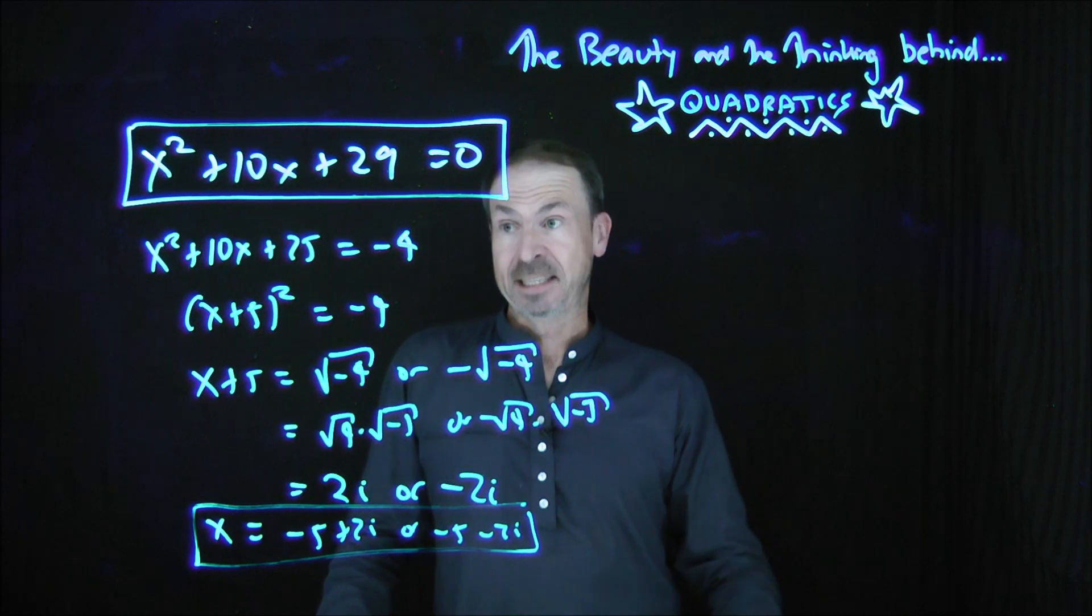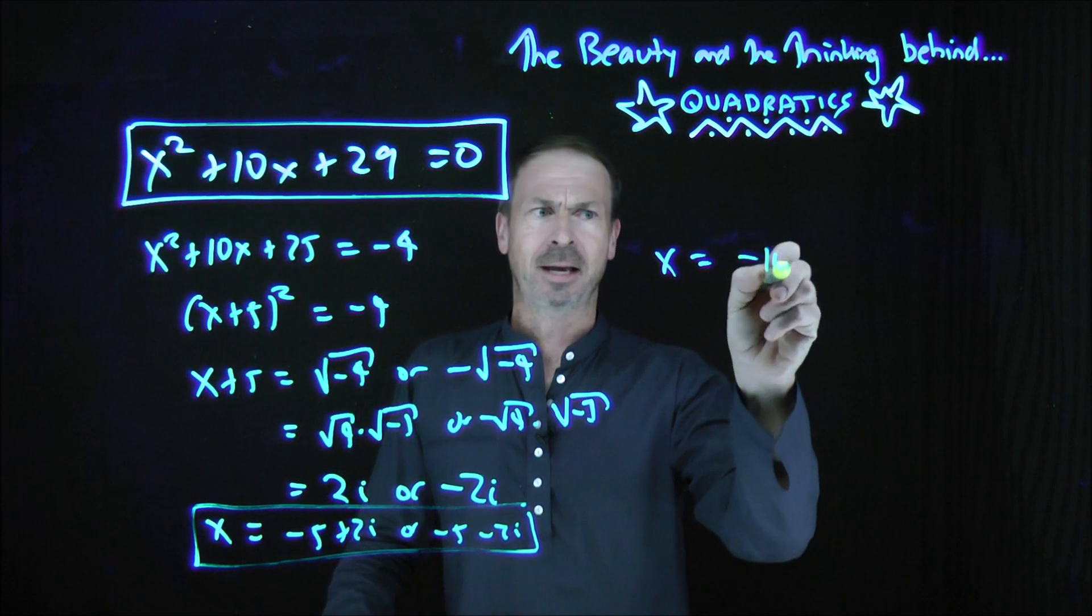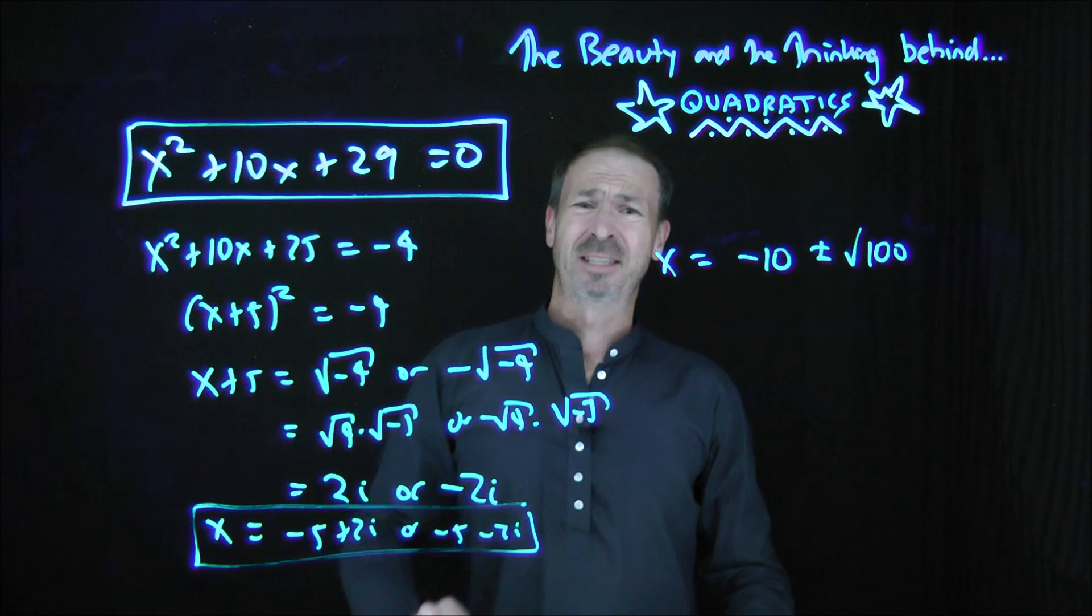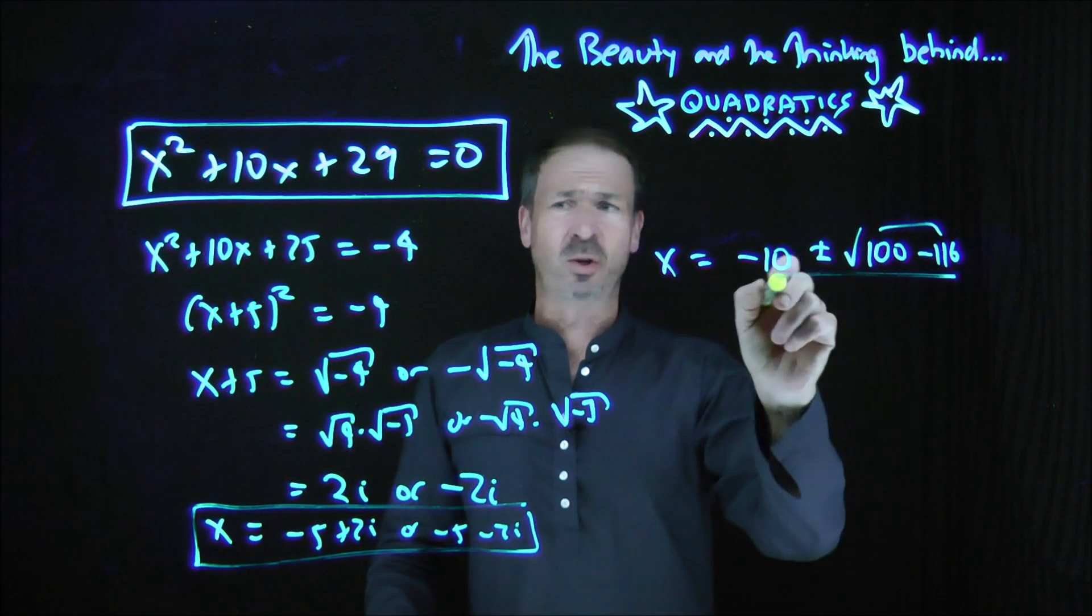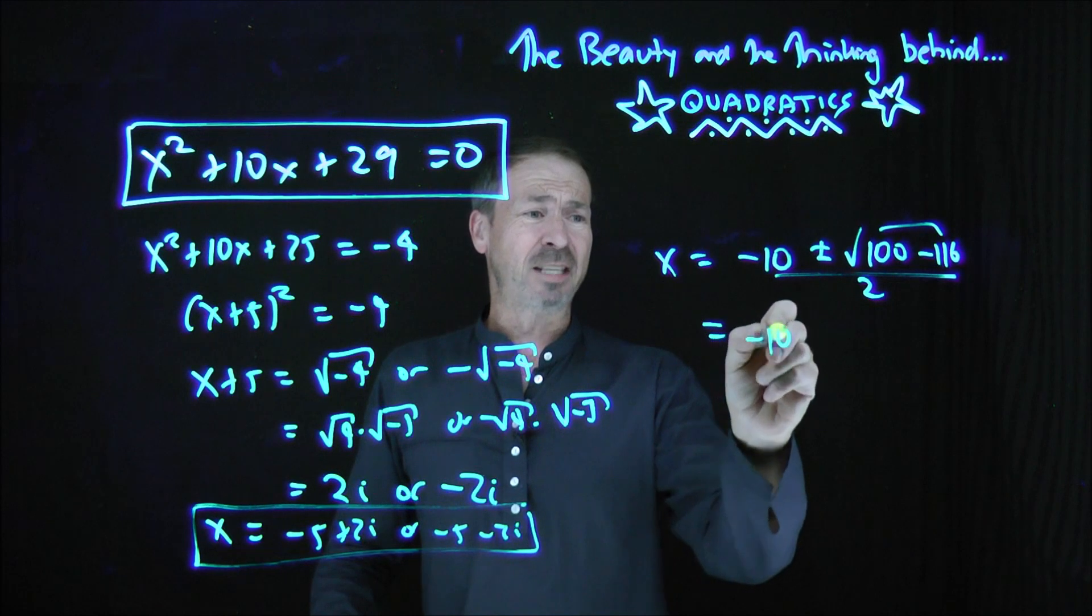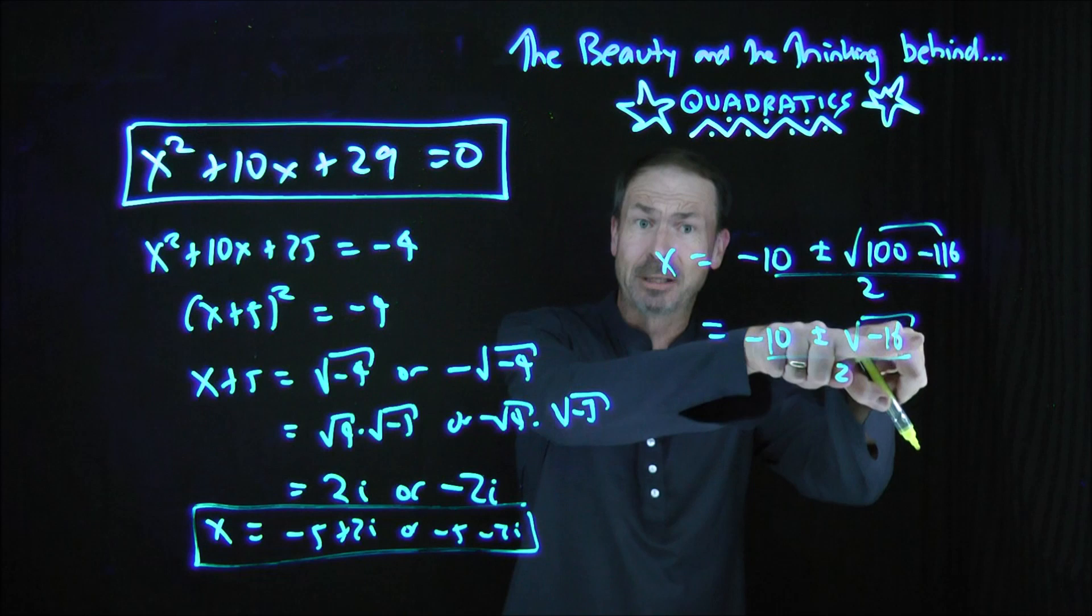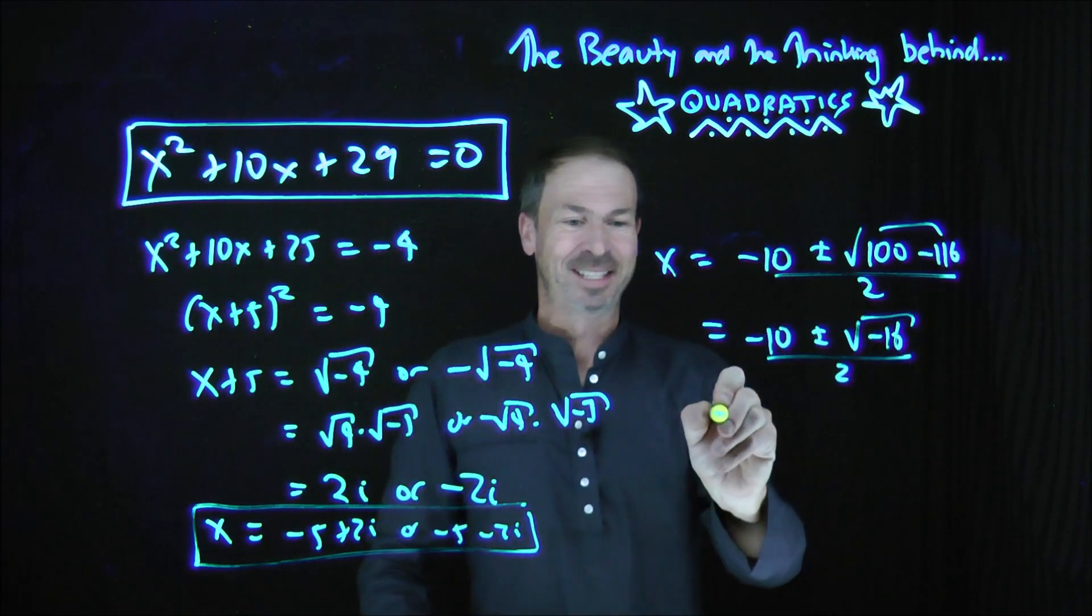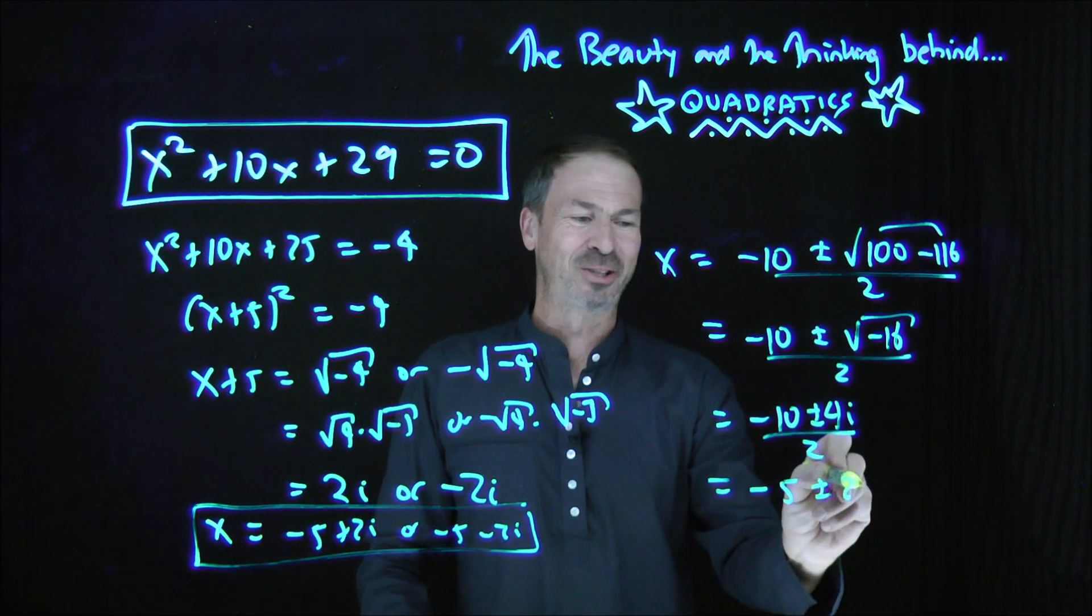If you did the quadratic formula on this one, you'll get the same issue. X will be negative b plus or minus square root of b² - 4ac, which is 100 - 4 times 29, that's like 116 or something, all over 2a. So this is -10 ± √(-16) all over 2. Square root of 16 times the square root of -1, so that's 4 times i. Square root of -1 is i. So this is -10 ± 4i all over 2, which is -5 ± 2i. Same answers.